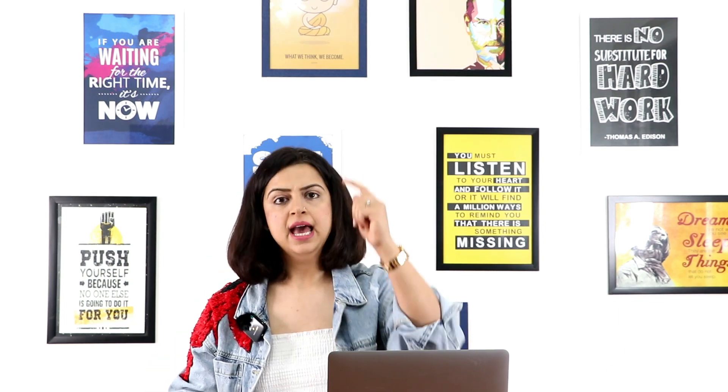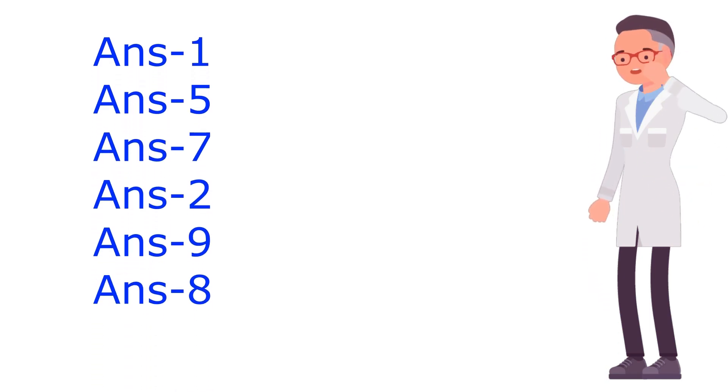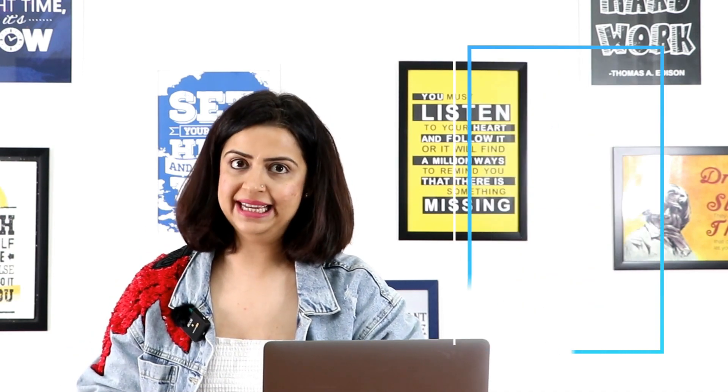Alright, now let's go on to the hack number two, that is the chronological order. Matlab, imagine kariye ki aap examiner hai aur aapko ek answer sheet check karni hai jiske andar answers kuch is tarah se hai. Answer number one, answer number five, answer number seven, answer number two, answer number nine, answer number eight. Kaisa lagega aapko? Won't you get confused? Exactly, yehi hota hai examiners ke mind mein agar aap chronological order ko follow nahi karte hai. And that is the reason why at times you get three out of five or four out of five of the exactly right answer. So, avoid doing that.